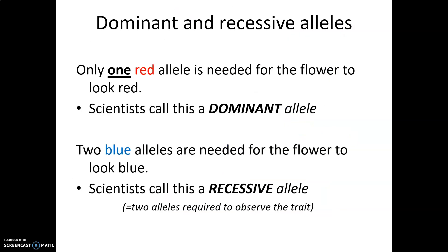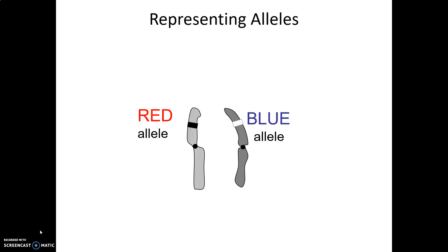This is where the idea of dominant and recessive alleles comes from. Because only one red allele is needed, that's the dominant allele. For the flower to be blue, there needs to be no red alleles — it takes two blue alleles, so that's the recessive allele. One thing I want to make clear is that dominant and recessive is not the same as more common and less common. Blue bioflowers might be more common because they survive better in the wild, even though it's the recessive trait.